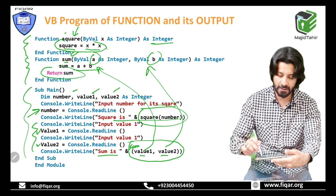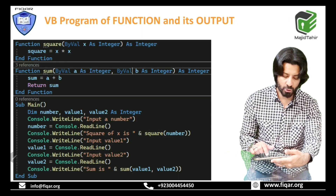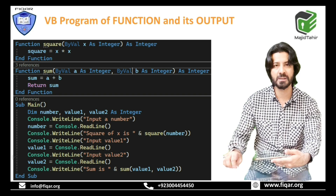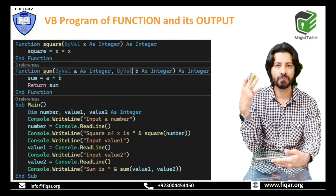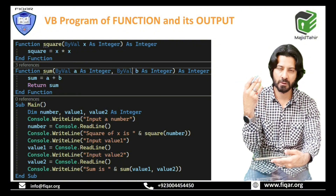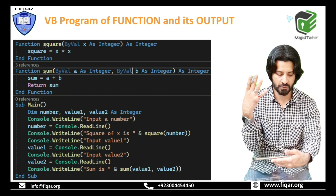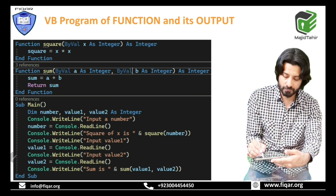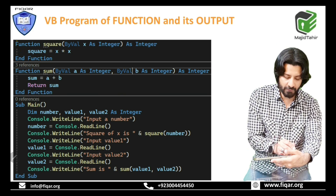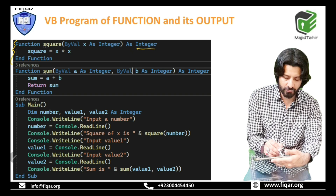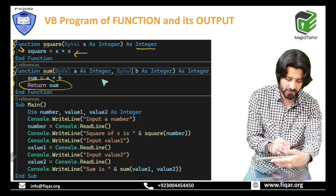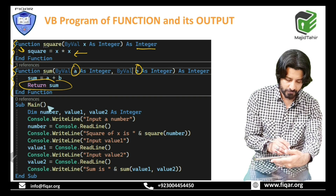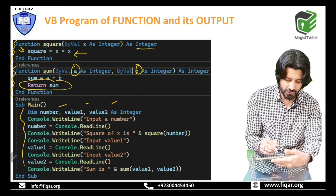Looking at the screenshot of the actual Visual Basic program: the function 'square' is defined with a return data type, and the value is returned via the function name. Another function 'sum' is defined with return data type and by val parameters a and b. The main program declares the three variables.